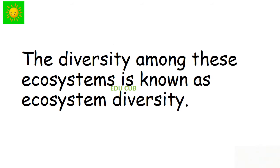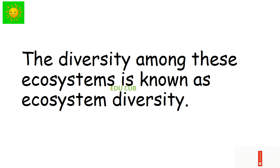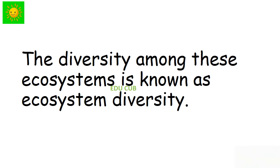When different ecosystems are considered, the animals and plants in these systems are varied. The physical environment and climate factors of those ecosystems are also different. The diversity among these ecosystems is known as ecosystem diversity.